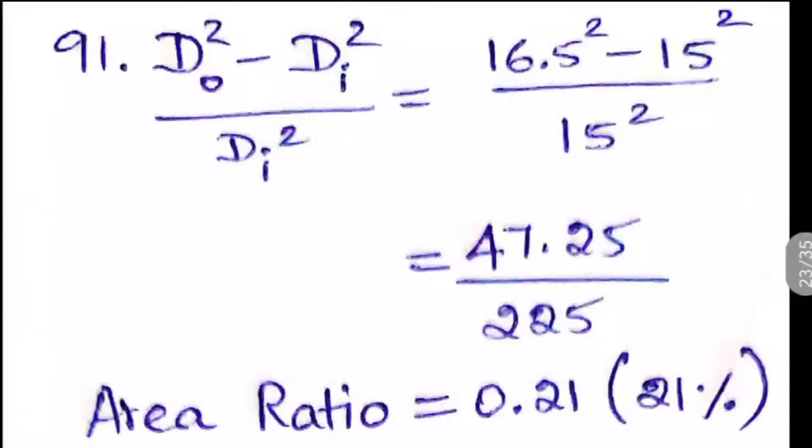So this is the formula for the area ratio: D outer squared minus D inner squared by D inner squared. So here I have converted the 165 mm and 150 mm to centimeters because it will be easy for the squaring of the numbers. So 16.5 squared minus 15 squared by 15 squared. So you will get the answer is 0.21 and 21 percentage.